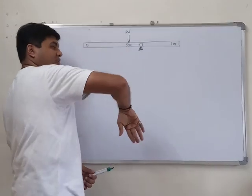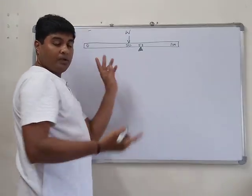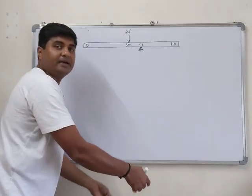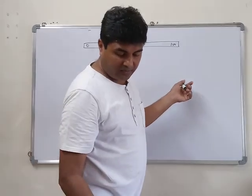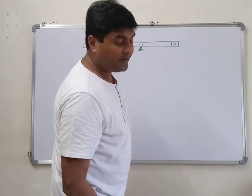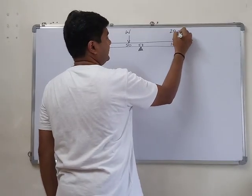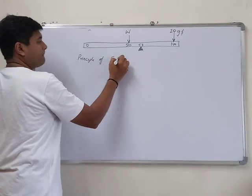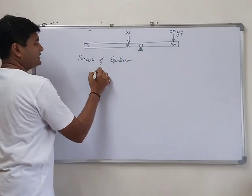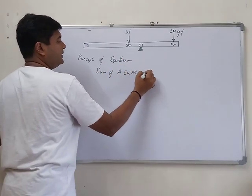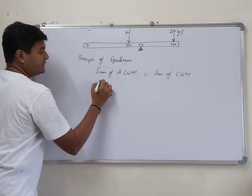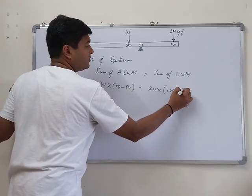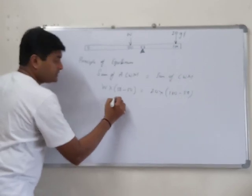Since the pivot is at 58, the ruler tends to fall toward that side, so the 20 gf weight is placed on the other end to balance it. By the principle of equilibrium — sum of anticlockwise moments equals sum of clockwise moments — we get: W into (58 minus 50) = 20 into (100 minus 58).